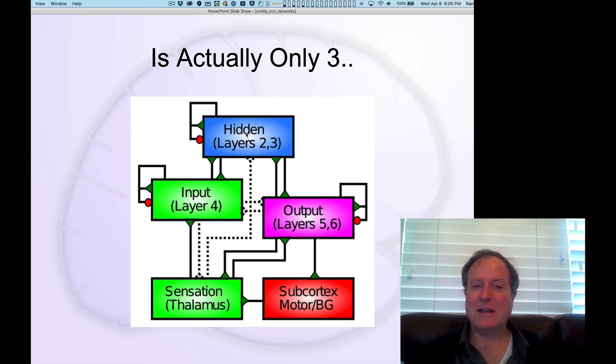And we call those hidden layers, kind of historically that's what they were called in early neural network models, areas that are particularly important for processing information, forming higher level representations, internal encodings of that information that are going to be what we talk about when we say that the brain is categorizing or organizing information. So most of the models that we're doing in this class are really essentially models of layers two and three, the superficial layers of the cortex.